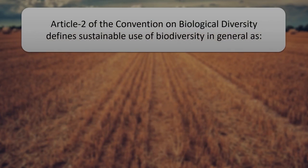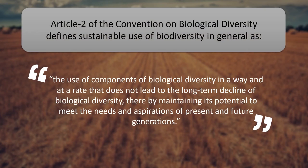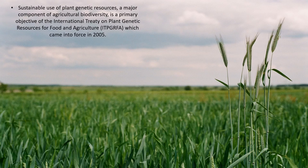Article 2 of the Convention on Biological Diversity defines sustainable use of biodiversity as the use of components of biological diversity in a way and at a rate that does not lead to long-term decline of biological diversity, thereby maintaining its potential to meet the needs and aspirations of present and future generations. Sustainable use of plant genetic resources is a primary objective of the International Treaty on Plant Genetic Resources for Food and Agriculture (ITPGRFA), which came into force in 2003.